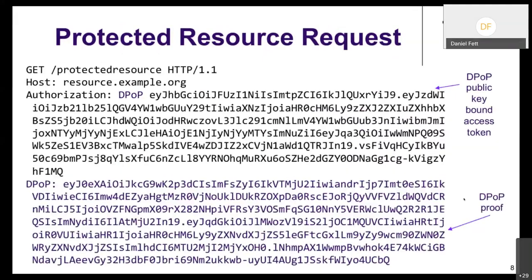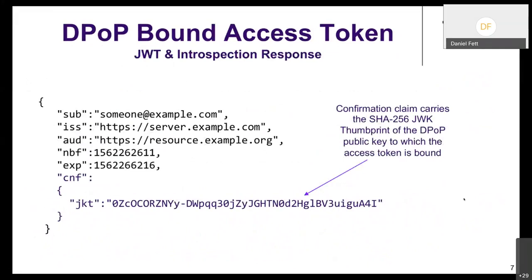Daniel clarifies: the DPoP proof is really independent from what's in the access token — it works the same way whether the access token is a JWT, an opaque string, or anything else. The 'jkt' claim is just a convenient piece of information to tell the resource server the token is bound. If you don't want it in the access token, introspection works similarly, or you can store it in a database.